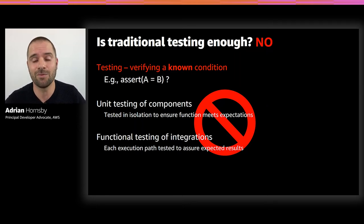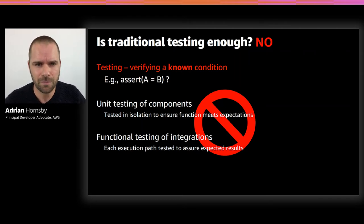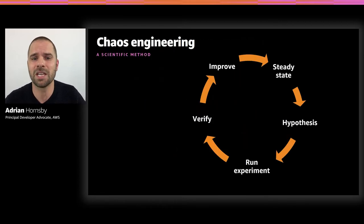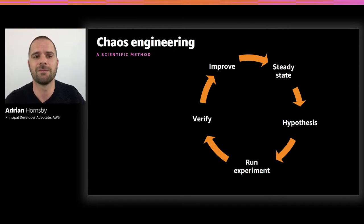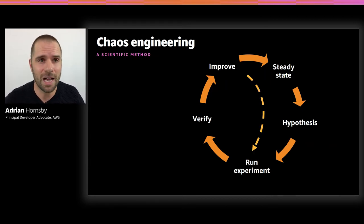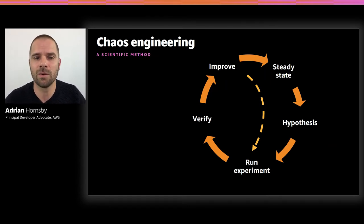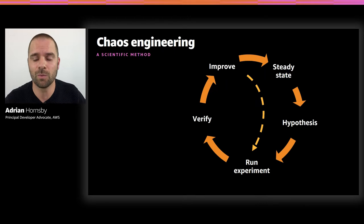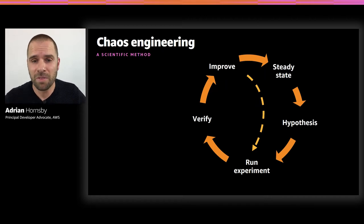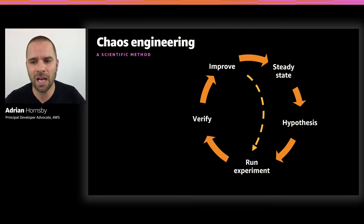Luckily, there's a practice that really helps with this kind of unknown error, and it is chaos engineering. Chaos engineering is the process of stressing an application in a testing or production environment by creating disruptive events, such as a server outage or API throttling. We then observe how the system responds and implement improvements. We do that to prove or disprove our assumptions about the system, in the form of a hypothesis about the system's capability to handle those disruptive events. This is really the principle behind the scientific method.